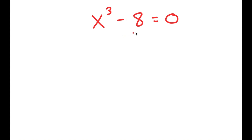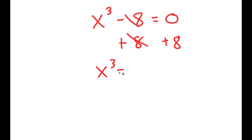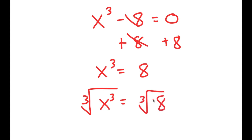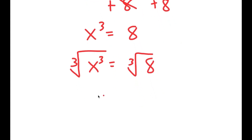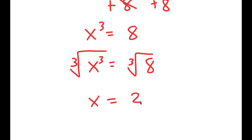So how most people solve this equation is they add 8 on both sides, so they get x to the power of 3 is equal to 8. And then they take the cube root on both sides — the cube root of x to the power of 3 is x, and the cube root of 8 is 2. So they get x equals 2, which is a solution to this equation.